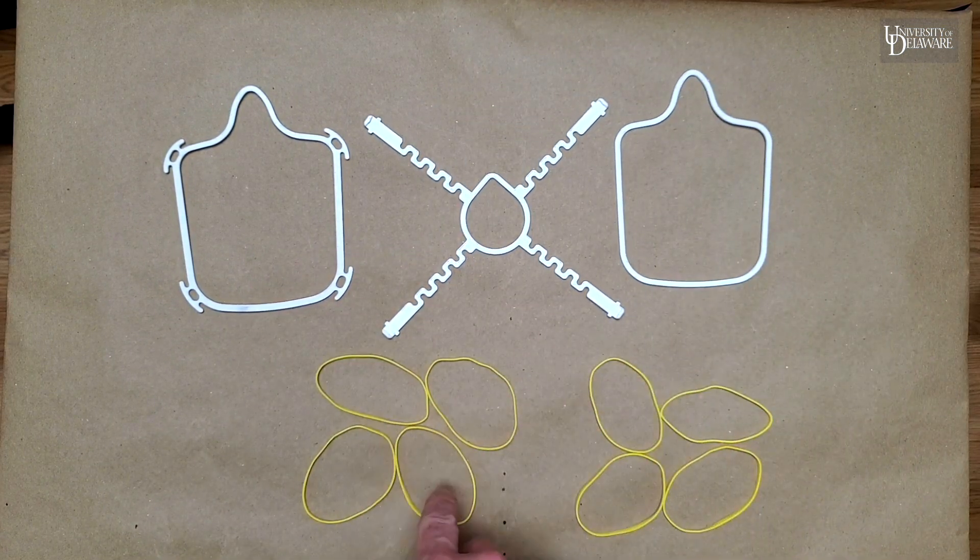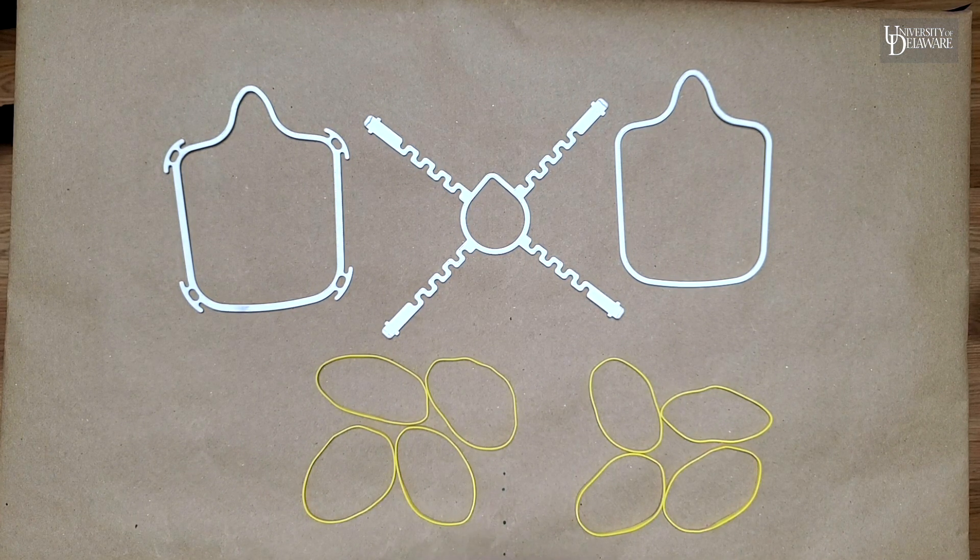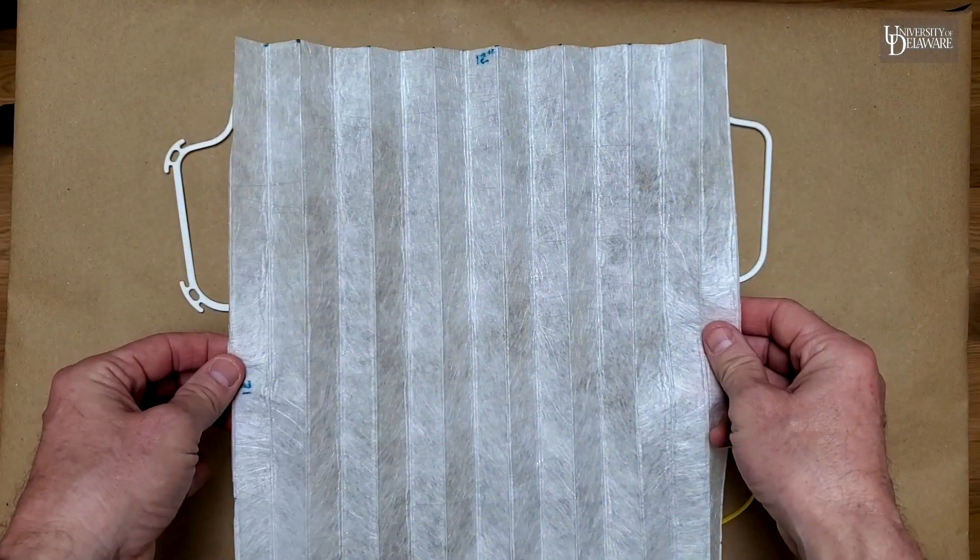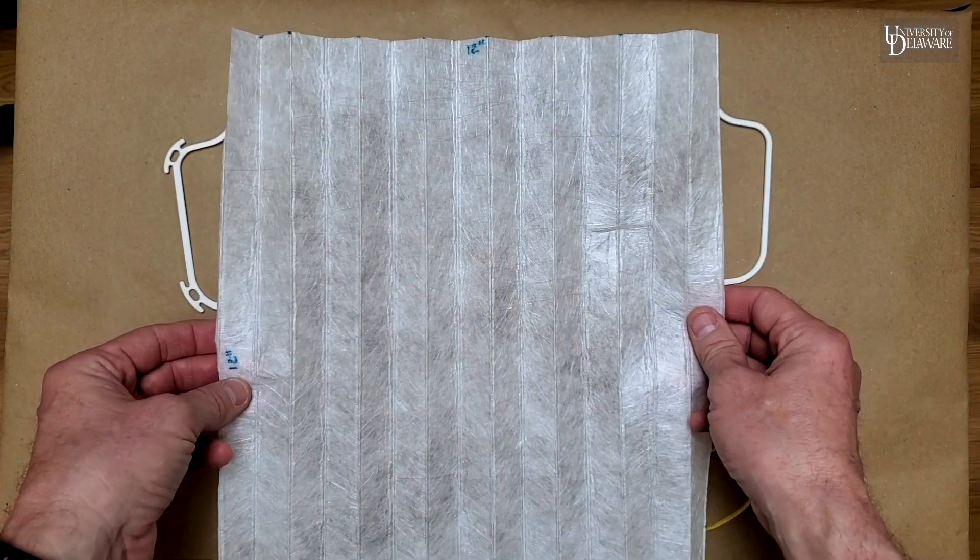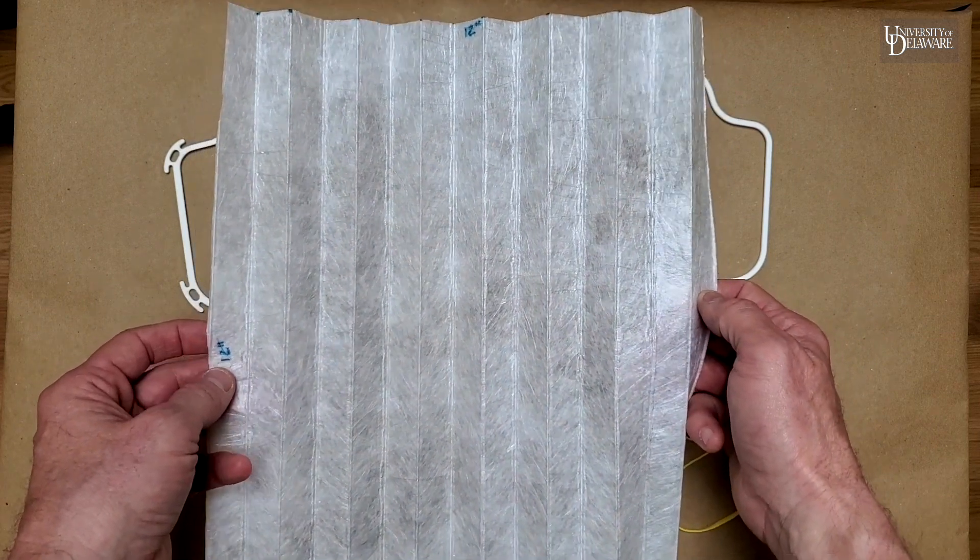And then we have two sets of four bands that we're going to fashion into a strap to hold this onto your face. And the last piece is a swatch of filter material, 12 inch by 12 inch. This is from a HEPA furnace filter.